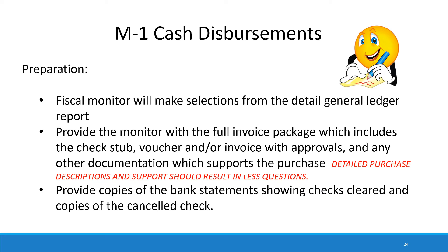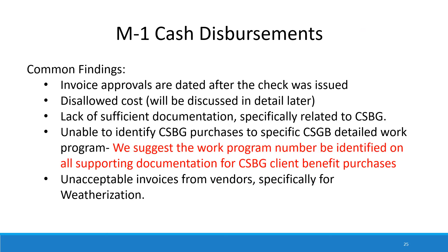Additionally, we are going to ask to see bank statements showing where those payments have cleared, and we would like to see copies of the cleared checks, though I understand in some cases that's difficult anymore. Some things we commonly find in cash disbursements are that invoices were approved after the check was issued, there are also some disallowable costs, and there's a lack of sufficient documentation specifically related to CSBG transactions. We're also unable to identify CSBG purchases to specific work programs, so we'd like you to write the work program number on your purchases for any client benefits.